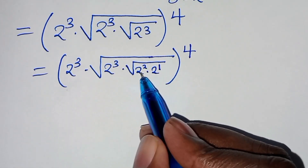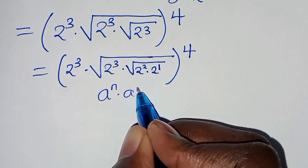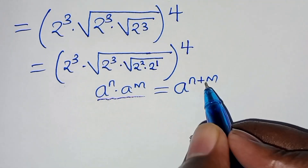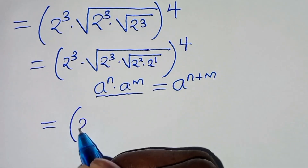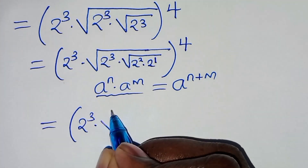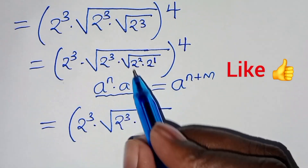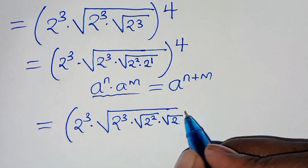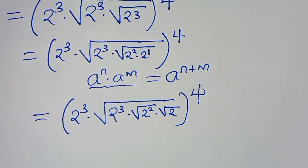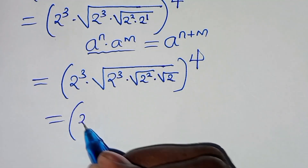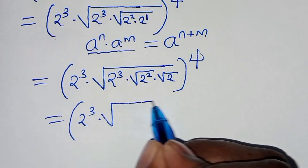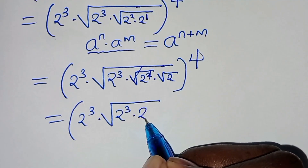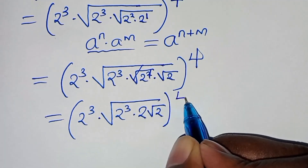Applying the exponent property that a to power n times a to power m equals a to power n plus m. From here we have 2 to power 3 times the square root of 2 to power 3 times the square root of 2 to power 2 times the square root of 2, everything raised to power 4. This simplifies so that we have 2 to power 3 times 2 times square root of 2, everything raised to power 4.